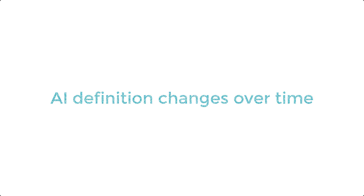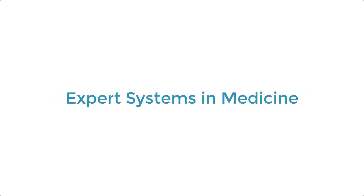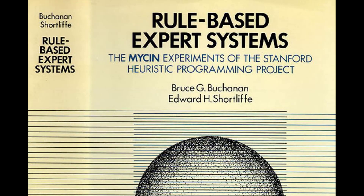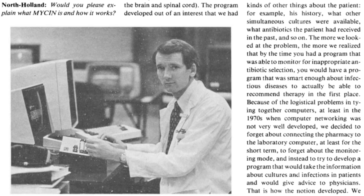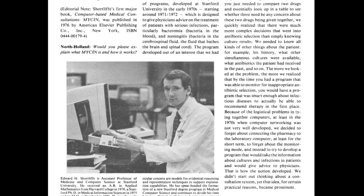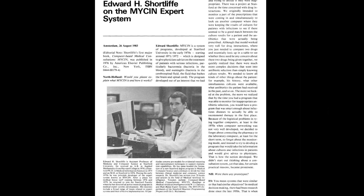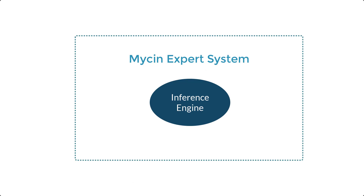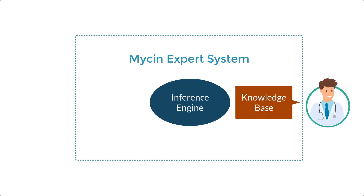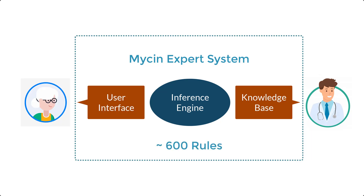One good example of an expert system in the field of medicine developed during the 1970s was the Mycin expert system. It was used to identify bacteria causing severe infections, and then the system would recommend antibiotics with the dosage adjusted for the patient's body weight. It was also used for the diagnosis of blood clotting diseases. The Mycin expert system operated using a fairly simple inference engine and a knowledge base of approximately 600 rules using the Lisp programming language.